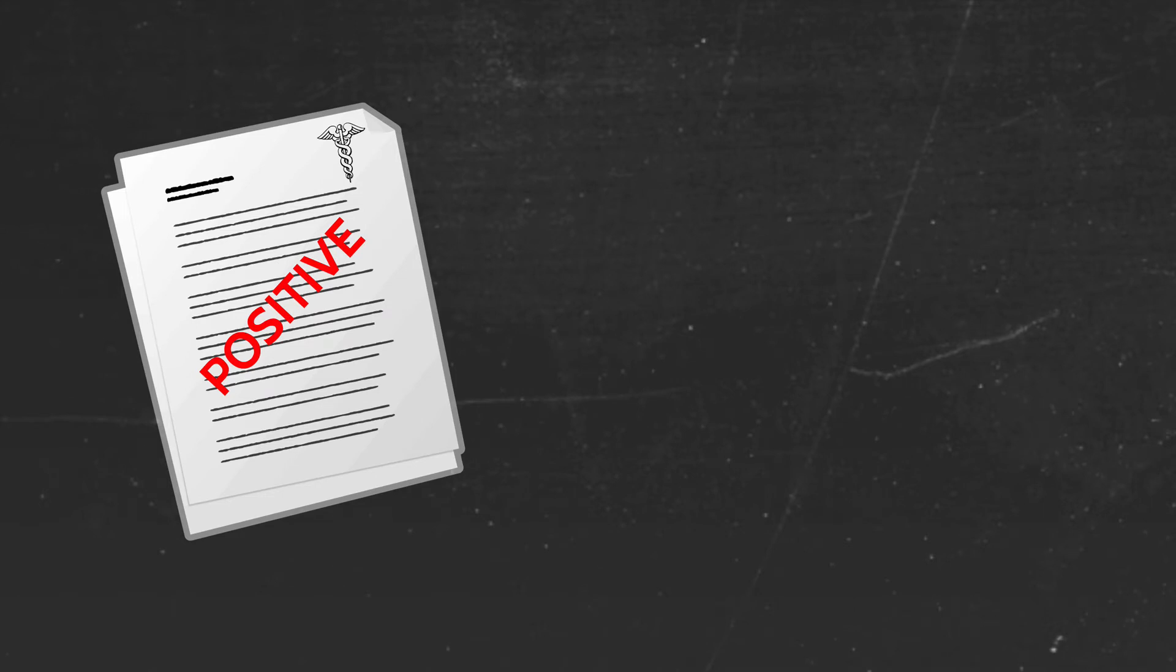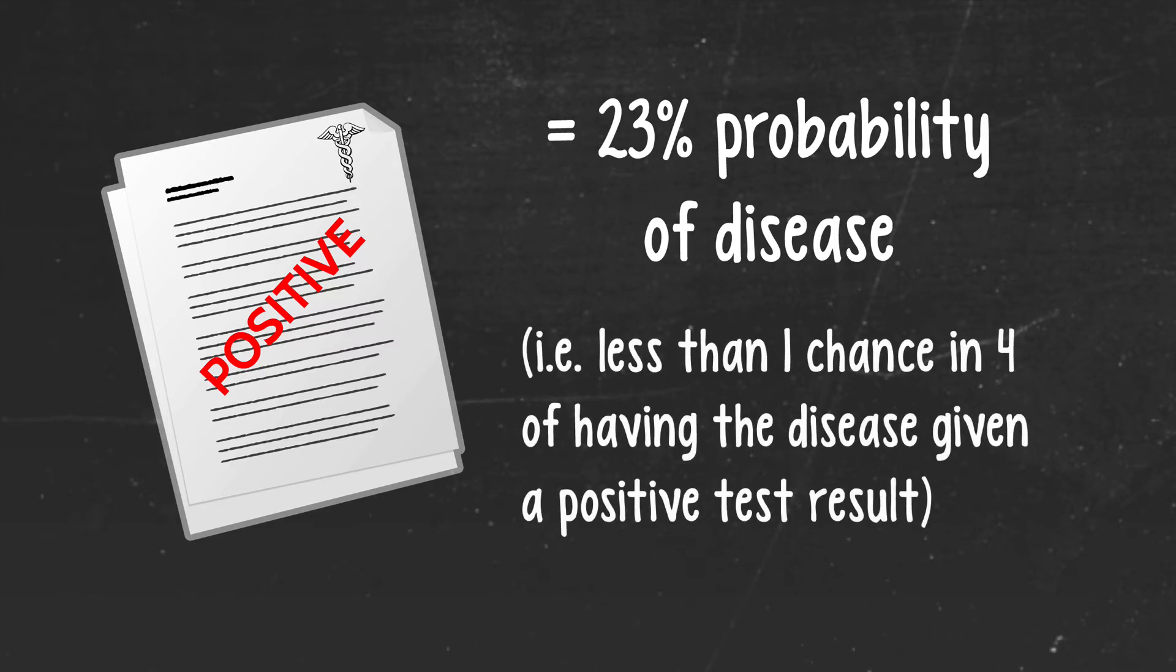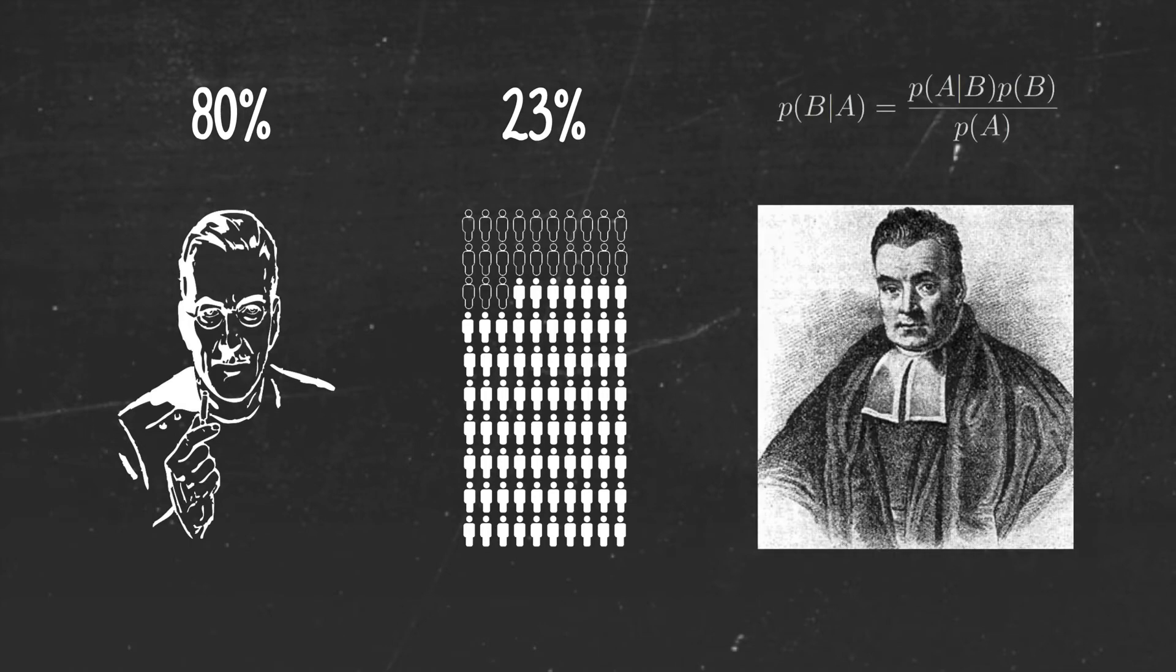Well you might be surprised to learn that the probability of having this hypothetical disease given the positive test result is only 23%, or a little less than one chance in four. So what gives? The doctor told you 80%, but the real probability is about 23%. How did the doctor get the interpretation of his own test so wrong? This is exactly the kind of situation for which we need some help from the Reverend Bayes and his famous theorem.